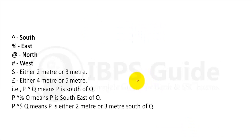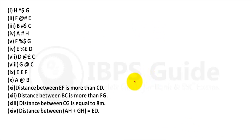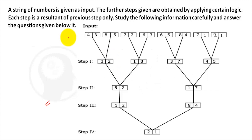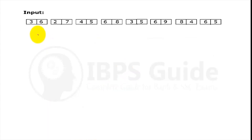This is the question based on direction. This is the instruction part, and this is the question. You have to draw the diagram based on these points, and based on the diagram you have to solve the two questions. Here a string of numbers is given as input and you have to find out the logic applied in every step.